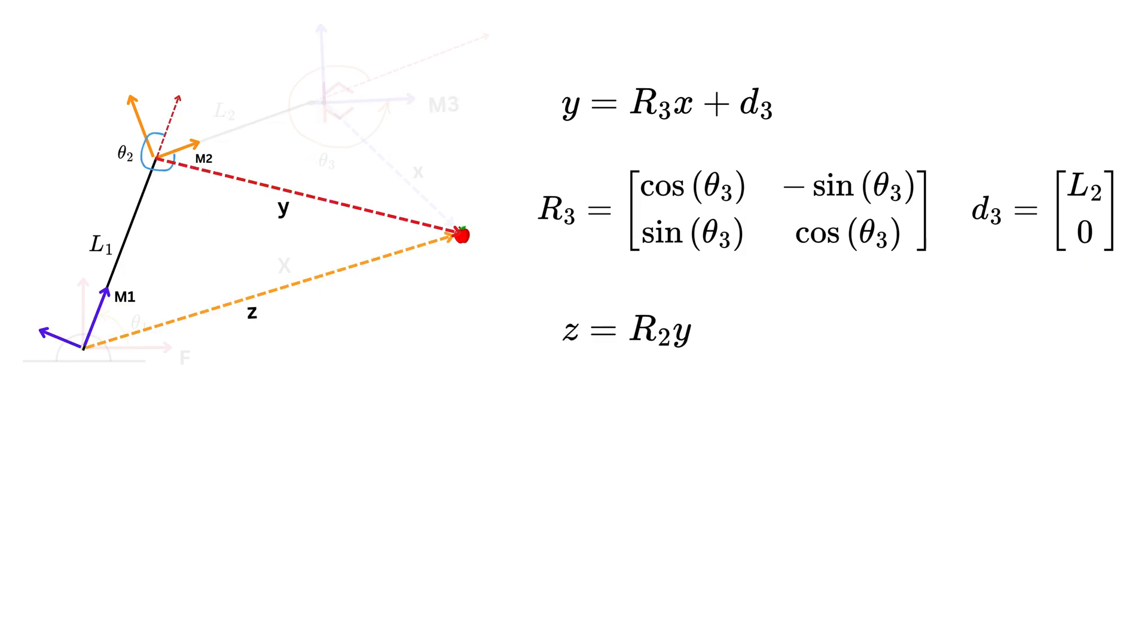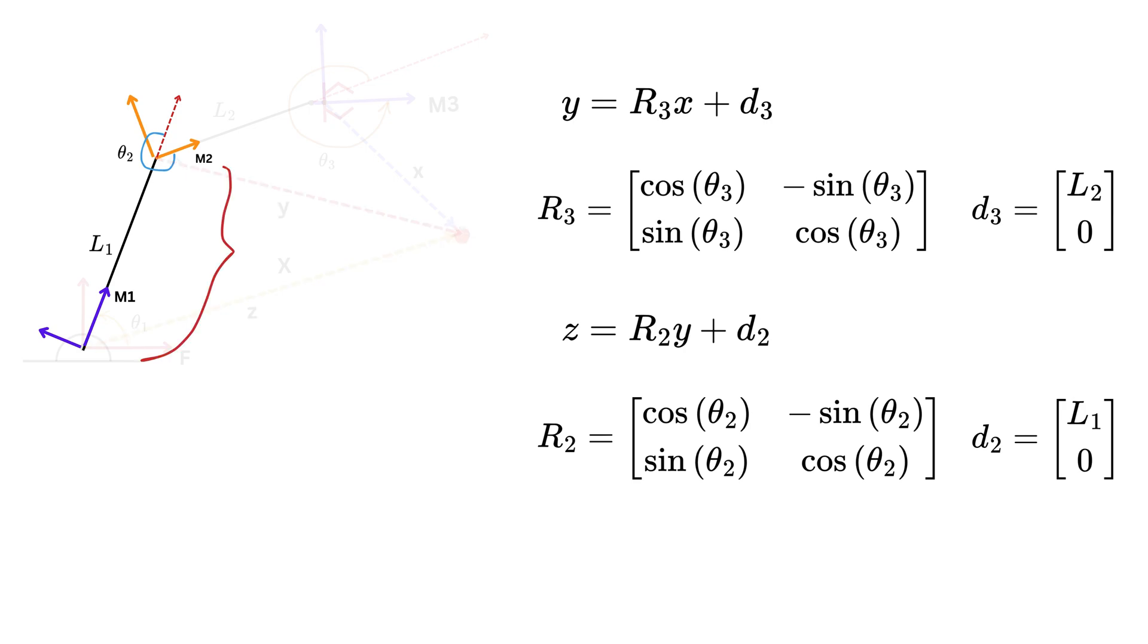Similarly, z equals r2 times y plus d2, where r2 will be this rotation matrix and d2 equals L1, zero. This is because translation from frame M1 to frame M2 happens entirely along the x-axis of frame M1 by a length of link 1, which is L1.